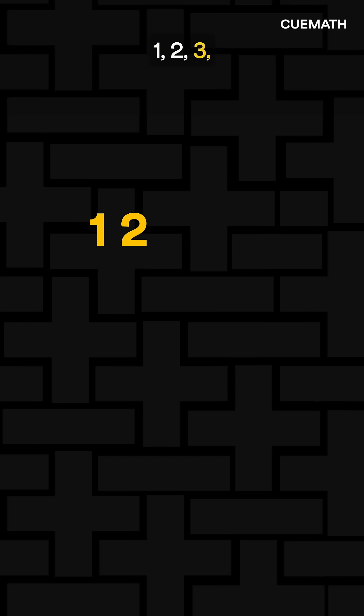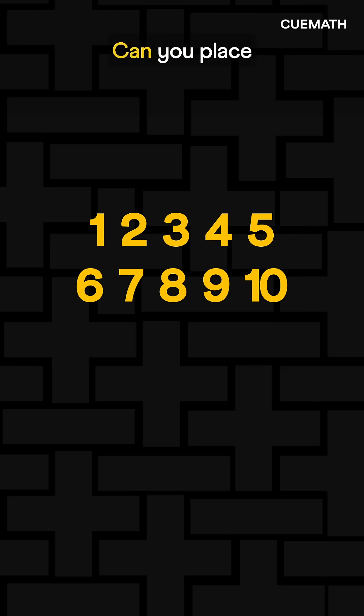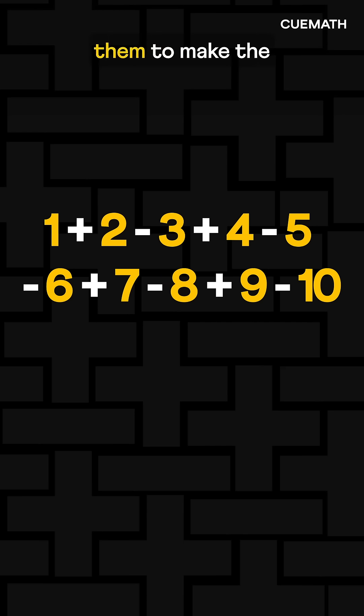Here are the numbers 1, 2, 3, and so on till 10. Can you place plus and minus signs between them to make the total 0?